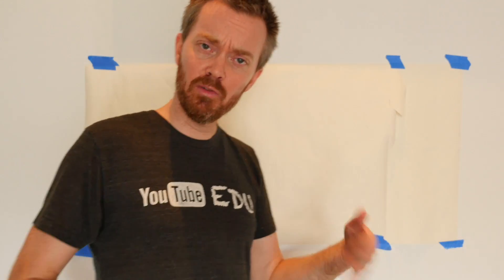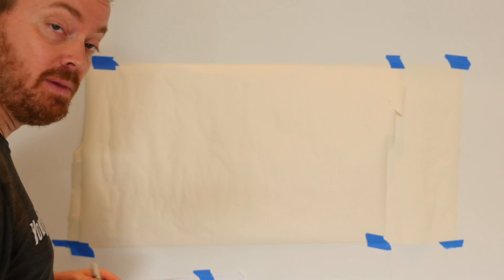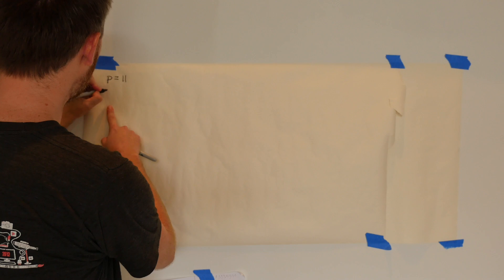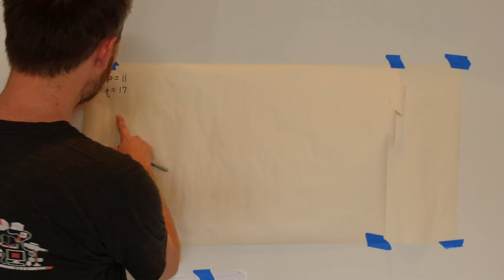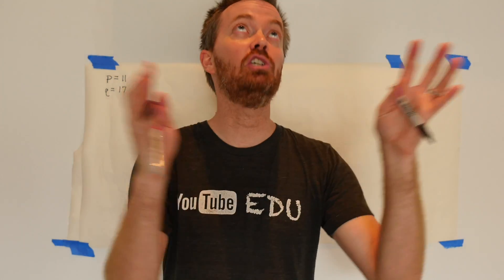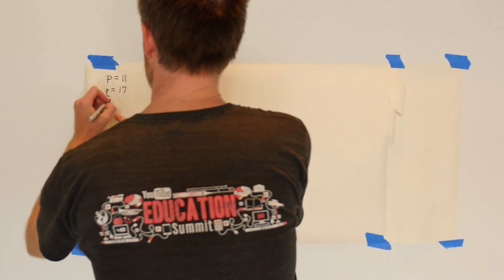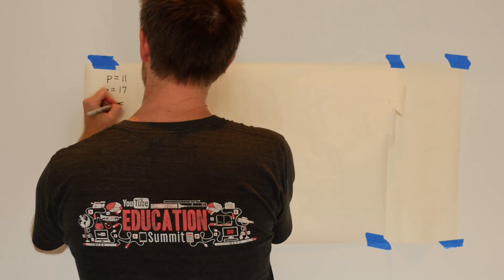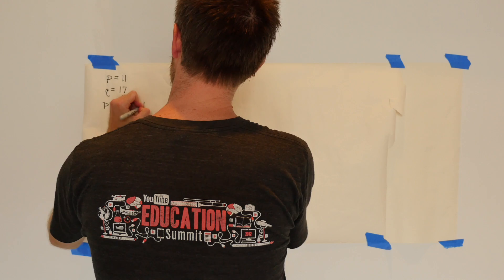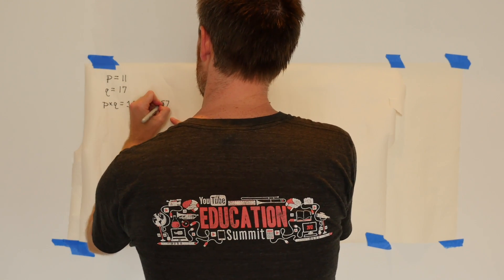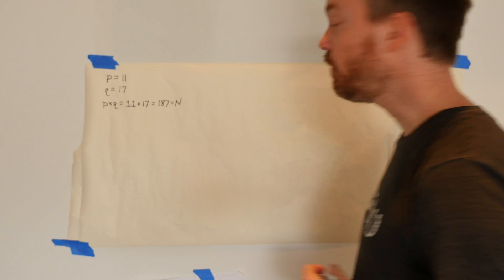Let's turn to the mathematics. We start by picking two prime numbers. I'll call the first one P and let P equal 11, and I'll pick another prime number Q and let Q equal 17. In practice these numbers are huge, but we're taking small ones here. The next step is to multiply those two numbers together: P times Q equals 11 times 17, which gives us 187. We'll label this number N.